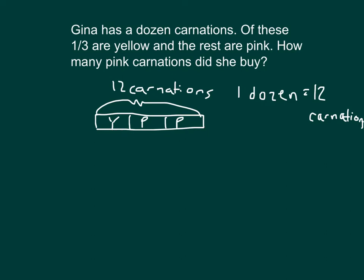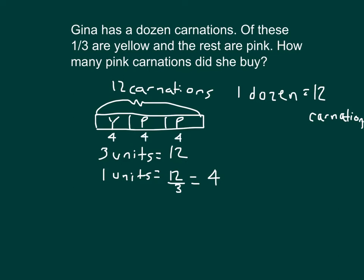We know that there are three units here and three units equals 12. So one unit equals 12 divided by three, which equals four. One unit is equal to four. So two thirds of the whole, which was 12, equals four plus four, which is eight. There are eight pink carnations that Gina bought.